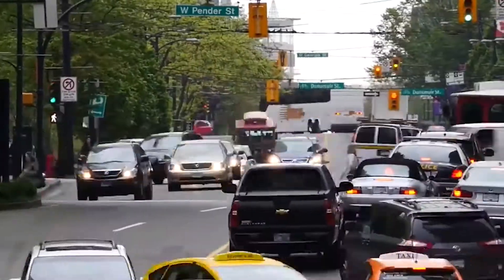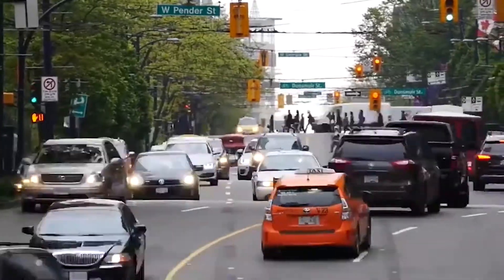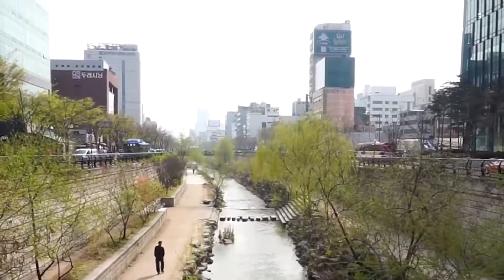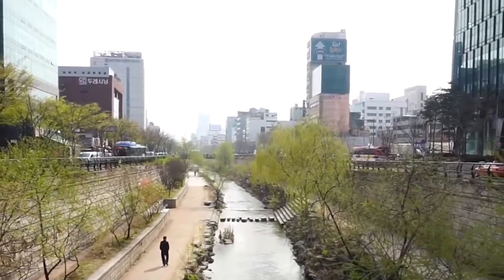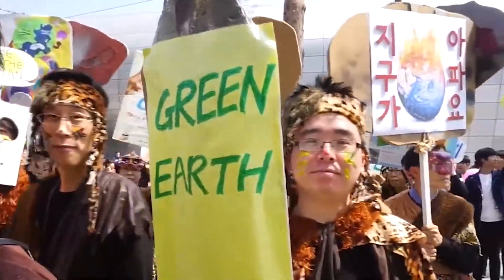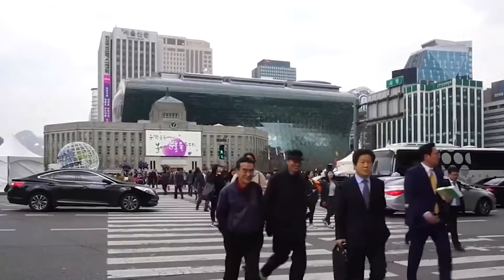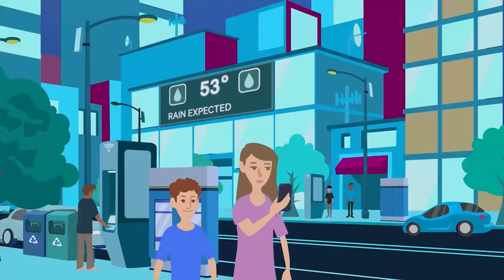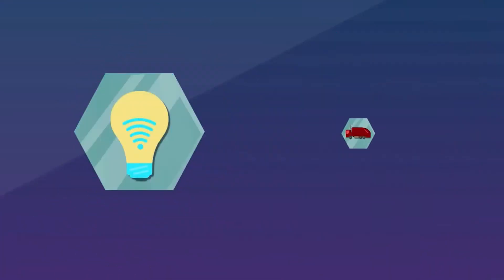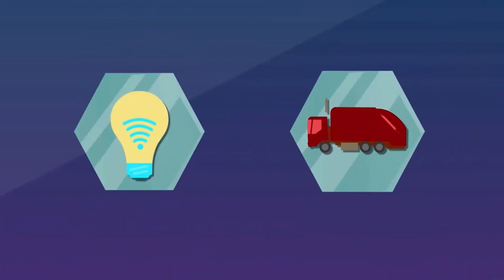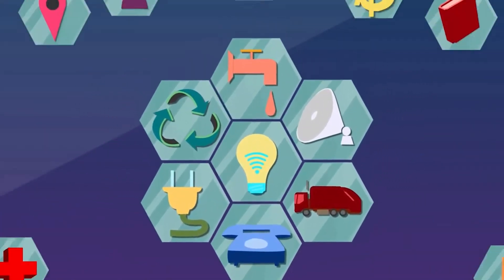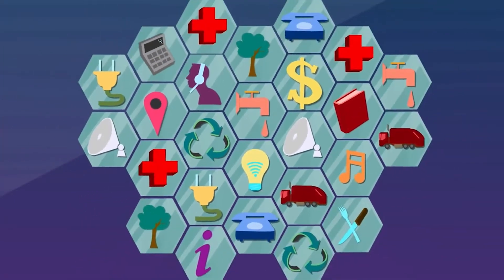The main goals of a smart city are to improve policy efficiency, reduce waste and inconvenience, improve social and economic quality, and maximize social inclusion. Cities use this tool to collect data in real time about all kinds of things, including traffic, air and water quality, and solar radiation.